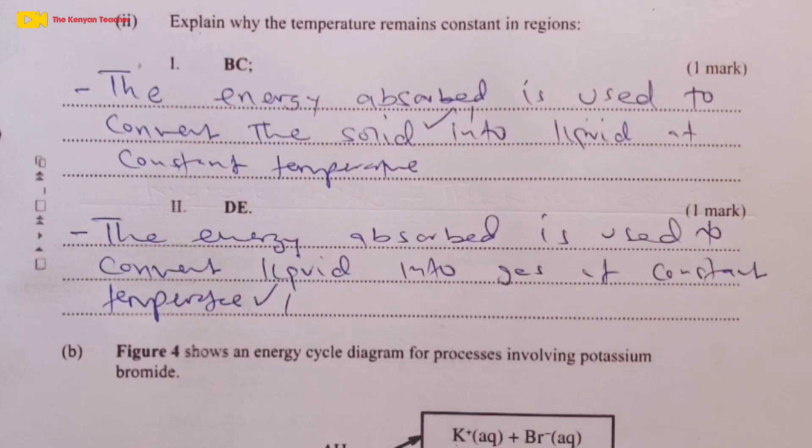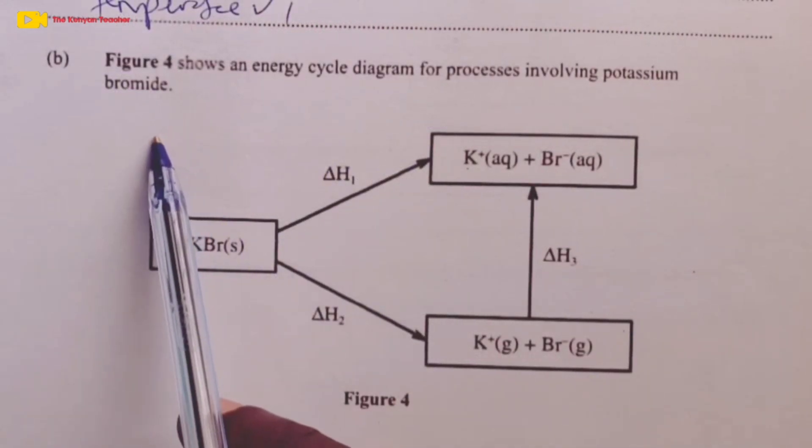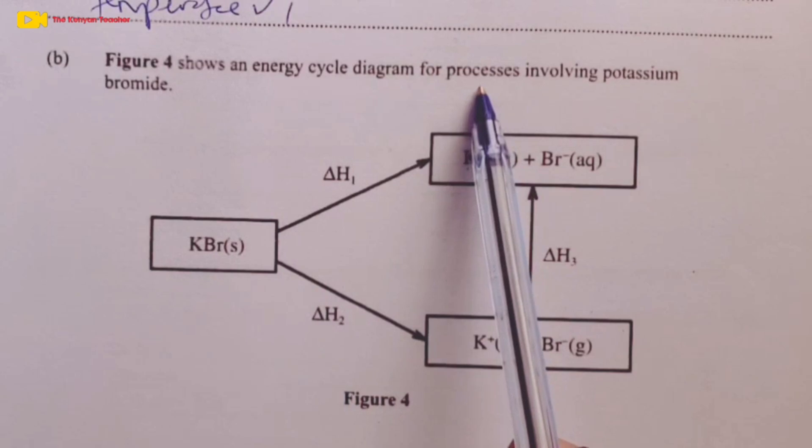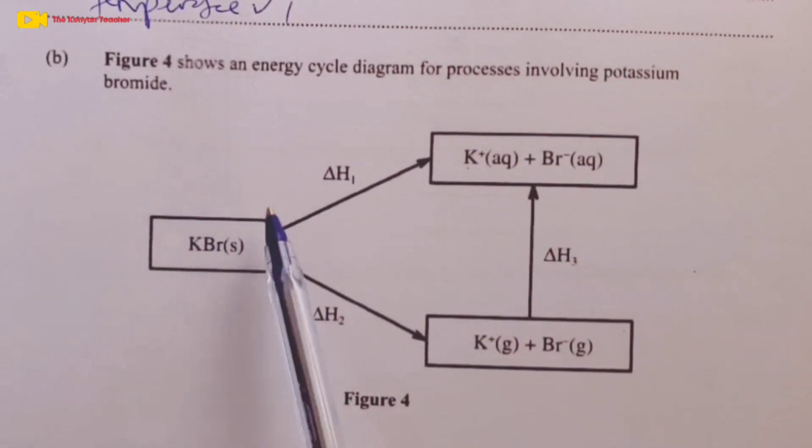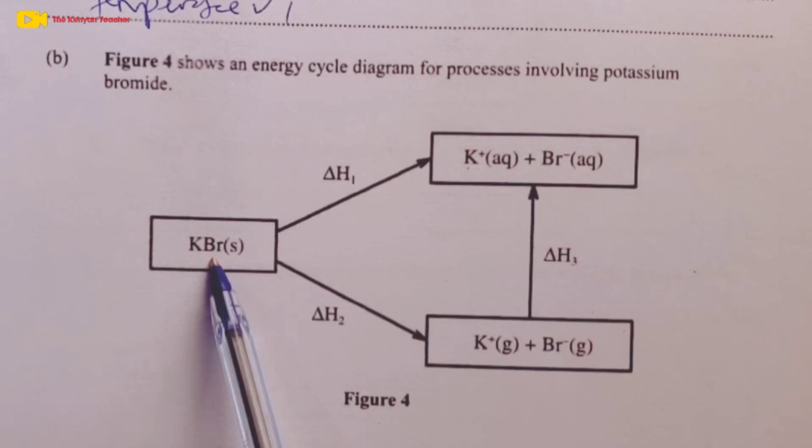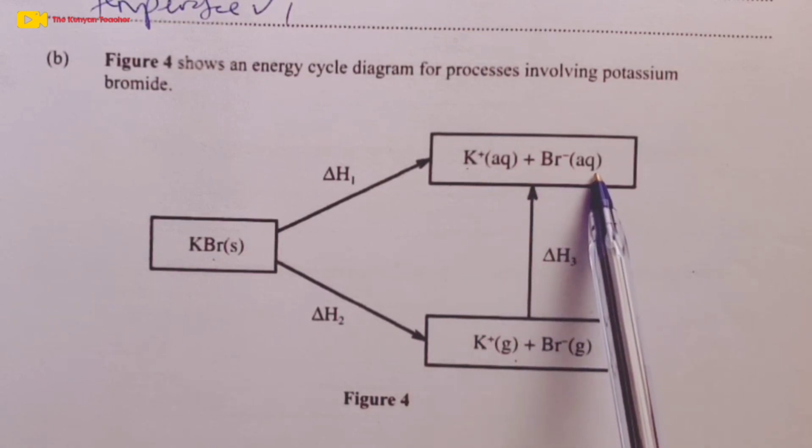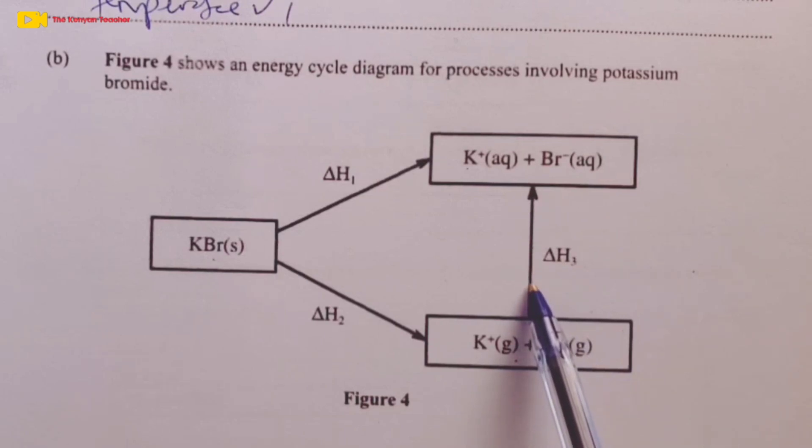We now proceed to part B. Figure 4 shows an energy cycle diagram for processes involved in potassium bromide. So we have the solid potassium bromide. If we follow delta H2, we realize that the solid is ionized in gaseous form. Then if we follow delta H3, the ions in gaseous form are being surrounded by water molecules to give the aqueous form of our substance.